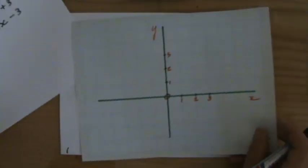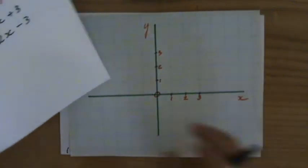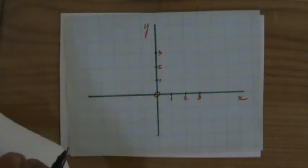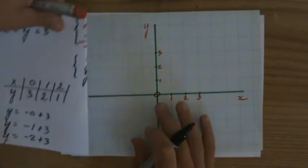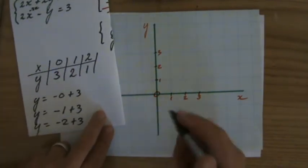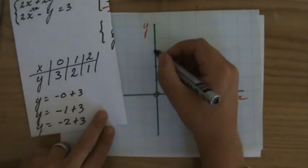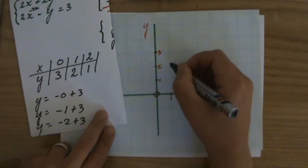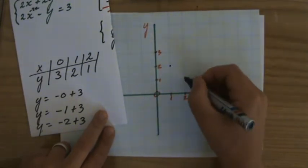So okay, I'm grabbing a set of axes which I already prepared. I'm going to plot those three points, and they should be on one line because it's a linear equation. 0, 3, which is over here. 1, 2, which is over here. 2, 1, that's over there.